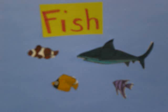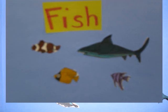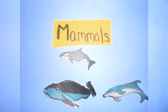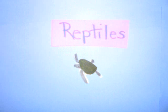Fish have fins, scales, and gills so they can breathe in water. They lay eggs. Although they may look like fish, some animals in the ocean like dolphins and whales are mammals and have live babies. Reptiles like turtles lay eggs, but they can't breathe underwater.